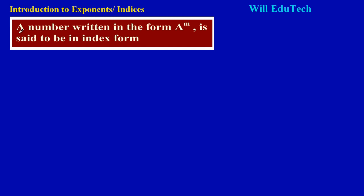A number written in the form of a base 'a' raised to a power of M is said to be in index form. So 'a' is the base — the big number at the bottom — and M is raised as the power up top. The M can be called the index, and that's our easy way to remember: the base is at the bottom.